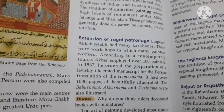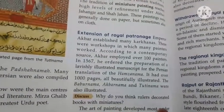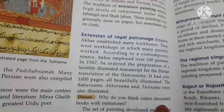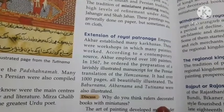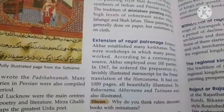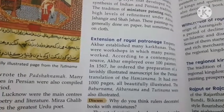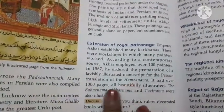Emperor Akbar established many karkhanas — workshops in which many painters worked. According to contemporary sources, Akbar employed over 100 painters. He ordered the preparation of lavishly illustrated manuscripts, including the Persian translation of Hamza Nama, which was over 1000 pages.